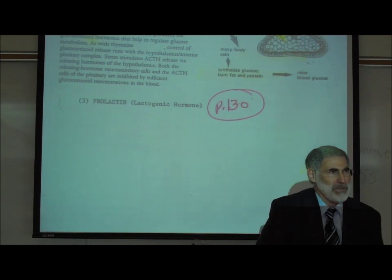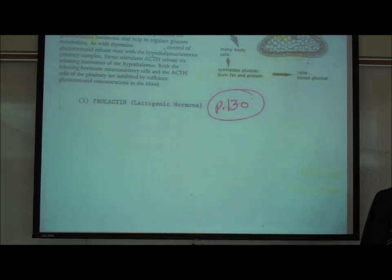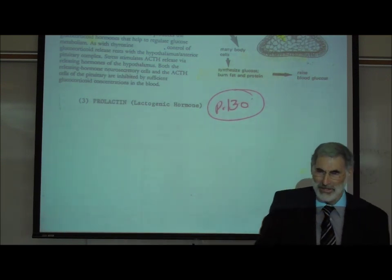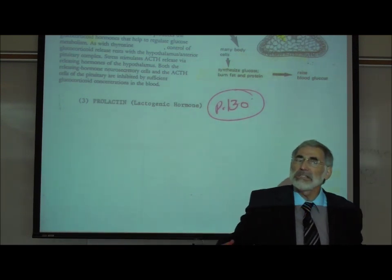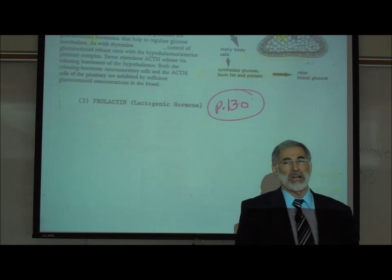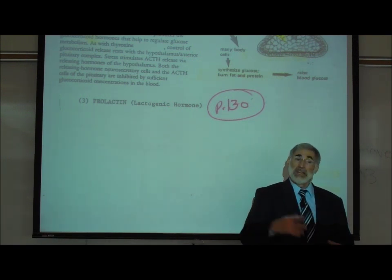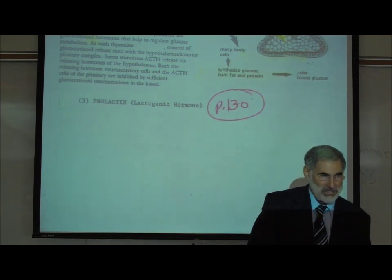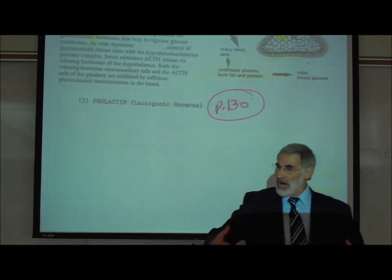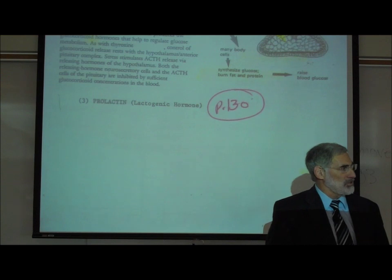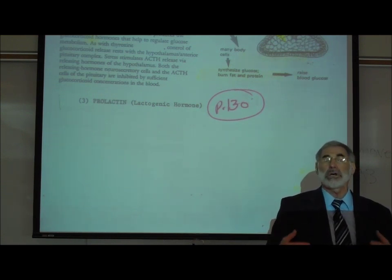Now you might be thinking, wait a second, Professor Fink, didn't we already cover this? We talked about oxytocin. Oxytocin does not cause the production of milk in the mammary glands. What does it do? It did two things we learned. We said it caused the uterus to contract, labor contractions, and it caused milk let down.